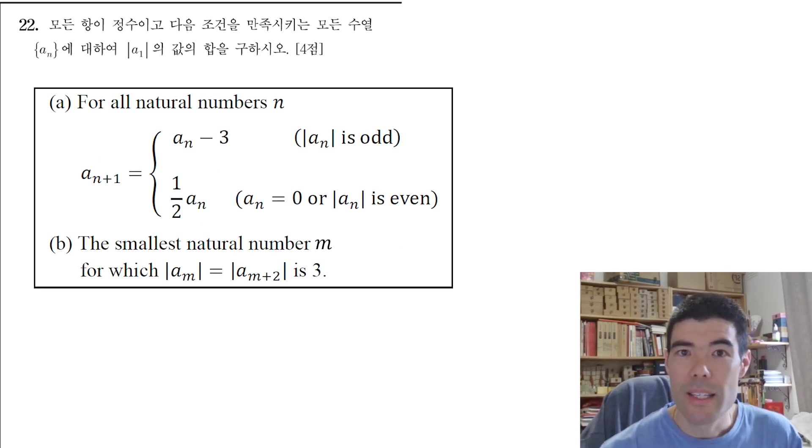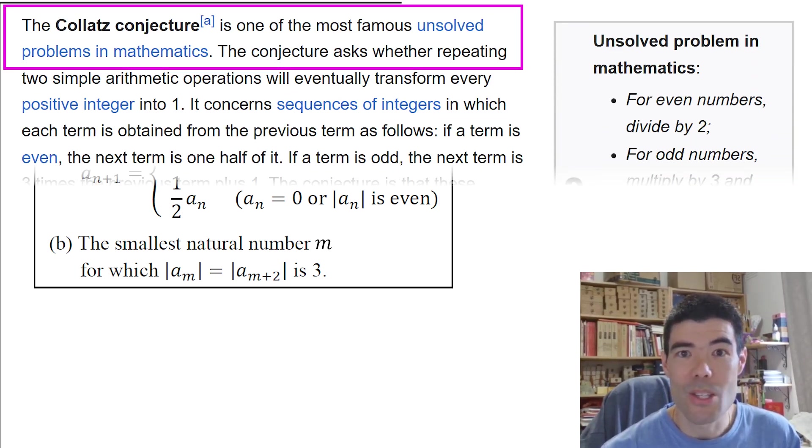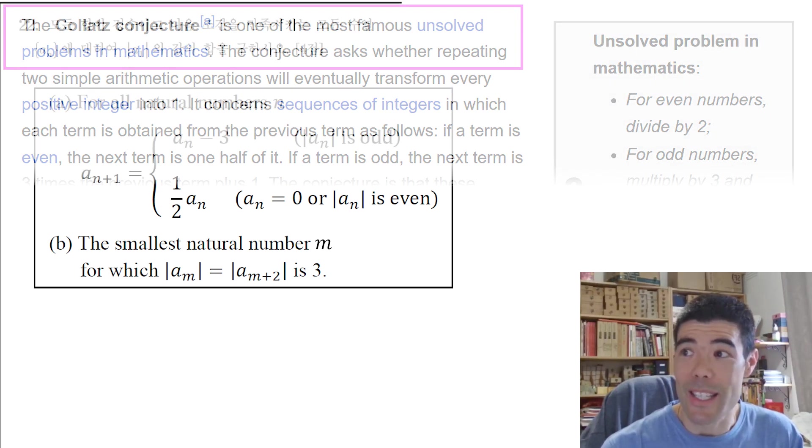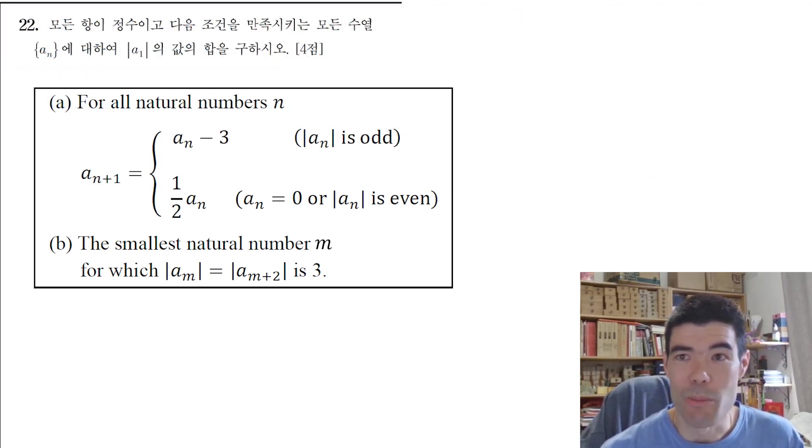Because the way the sequence is defined, the next term depends on whether the previous term is odd or even. Quite similar to the Collatz conjecture, which is a very famous unsolved number theory problem. So I'm curious, how hard actually is this problem on this Korean high school math exam?